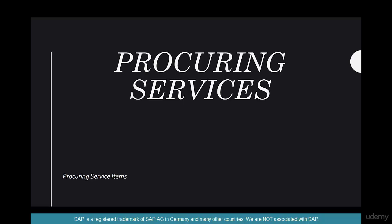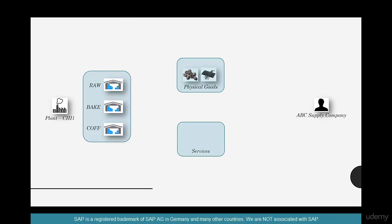In this section we are going to learn about how to procure services. We have seen how to procure stock materials and non-stock materials — this is a third variant: how to procure services. Just like we procure coffee beans, stirrers, flour, or any kinds of physical goods, we can procure services as well. Would you have a physical goods receipt happening? Of course not.